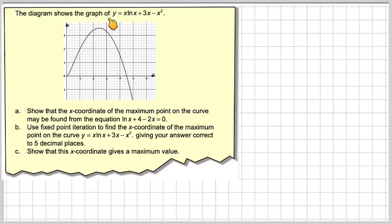The diagram shows the graph y equals x ln x plus 3x minus x squared. Show that the x coordinate of the maximum point on the curve may be found from the equation ln x plus 4 minus 2x equals 0.